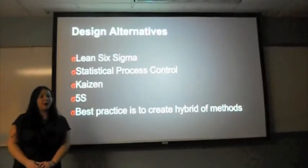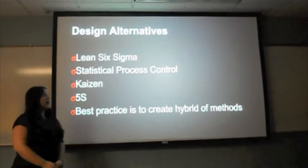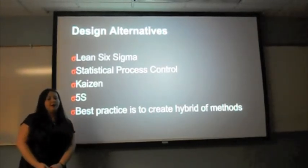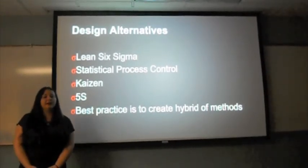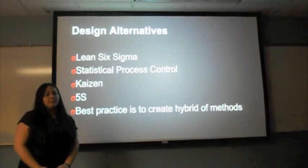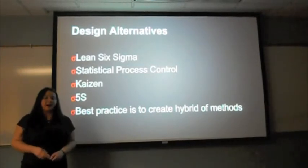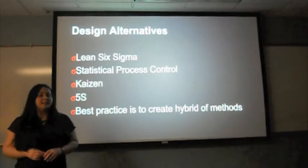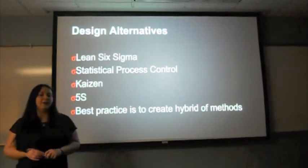Six Sigma may be the most popular method by name; however, it does have some design alternatives. There is a concept of Lean Six Sigma, which was also developed by Motorola. It combines traditional Six Sigma and lean manufacturing to eliminate waste and identify troubled areas of production, delays, processing, and logistics. Statistical process control is more of a statistical method that organizes production data by time, process, and defects. It's a good indicator of where a company can optimize efficiency, but it's not as comprehensive as Six Sigma.